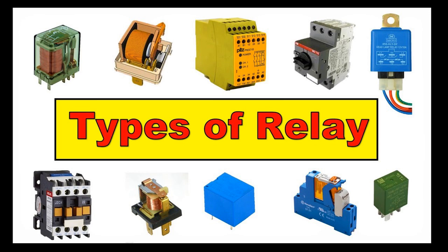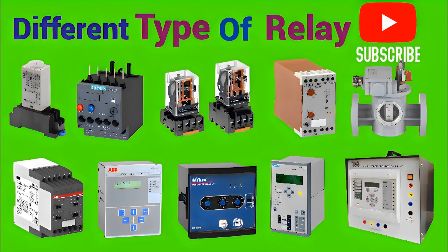Alarm and Trip Contacts: The Buchholz relay has two sets of contacts, one for alarm and the other for tripping. Working Principle — Minor Faults, Gas Accumulation: In the event of a minor fault, such as insulation degradation or arcing, small amounts of gas are produced inside the transformer tank. This gas accumulates in the relay's gas collection chamber, causing the float to rise and trigger the alarm contacts, signaling maintenance needs.